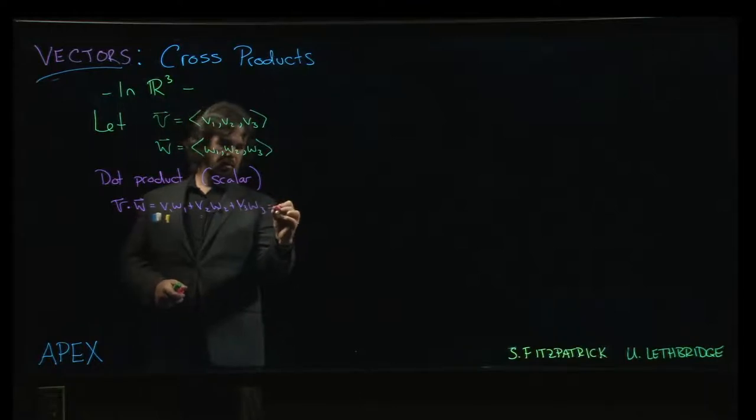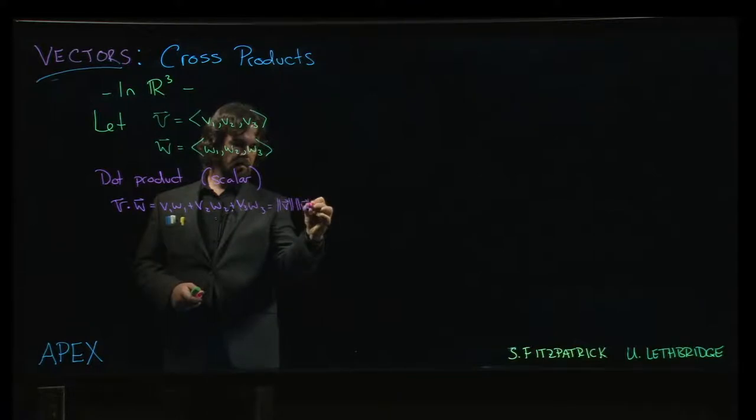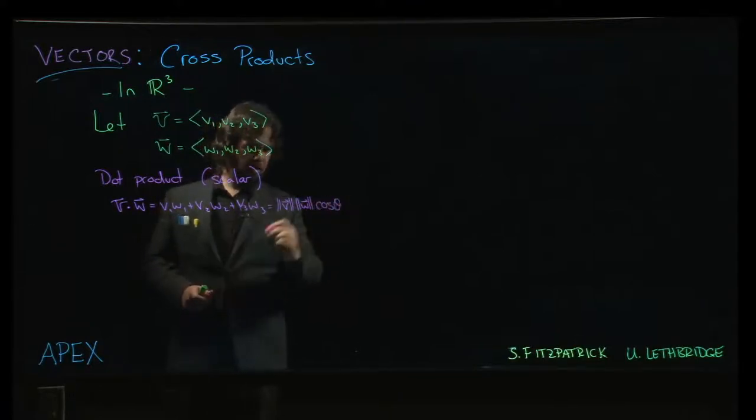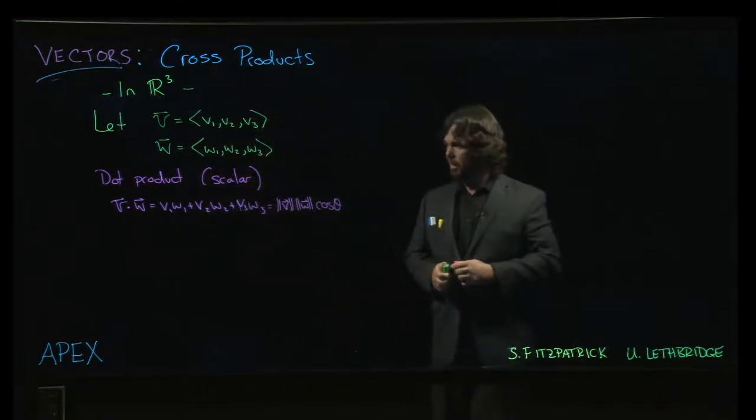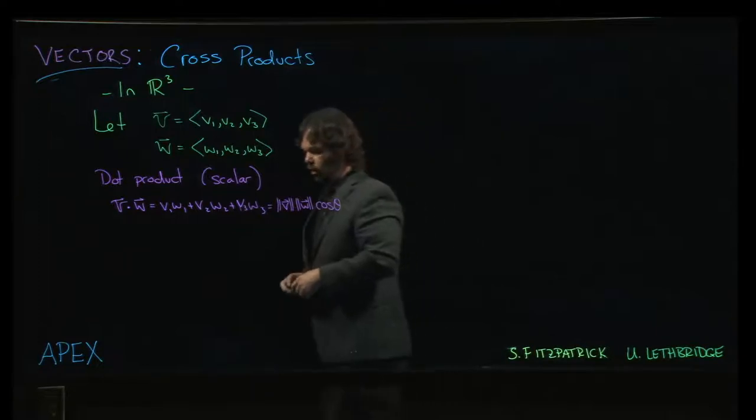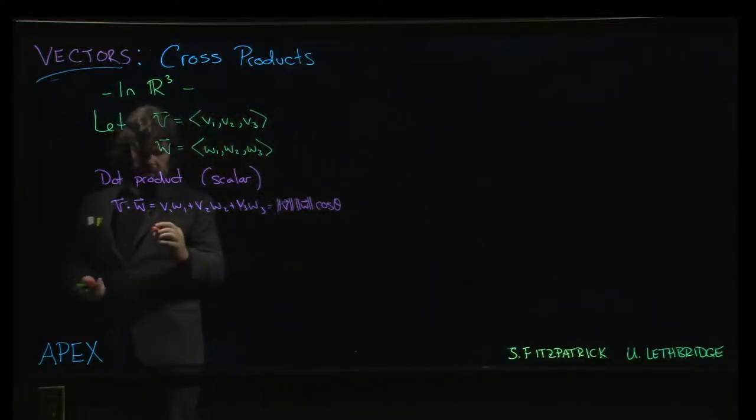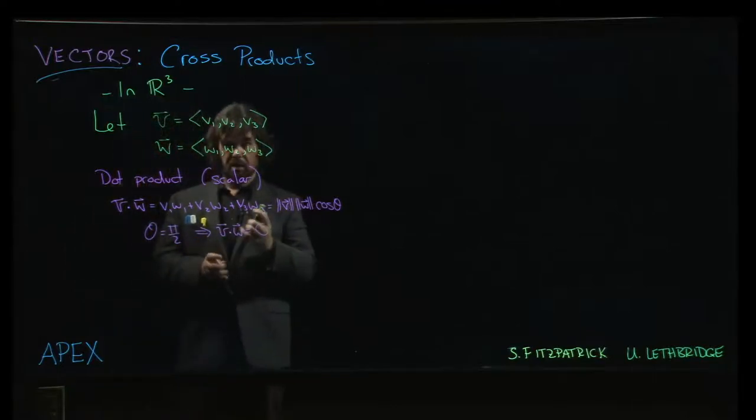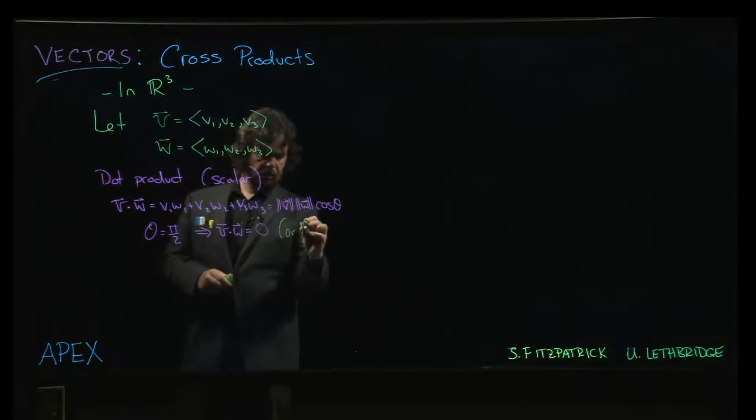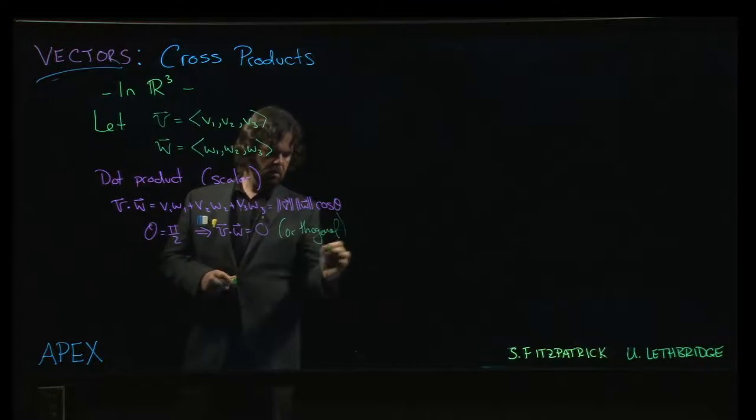We saw we can also write that as magnitude of v, magnitude of w, times cosine of theta. There are a lot of useful applications for the dot product. One of the things that we saw is that when theta is equal to pi over 2, a right angle, the dot product of the two vectors will be zero. We refer to this situation as these vectors being orthogonal.